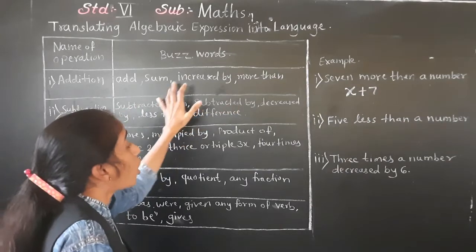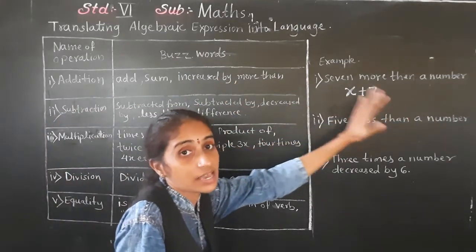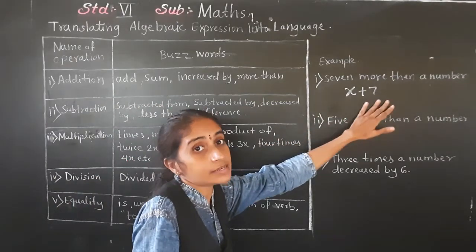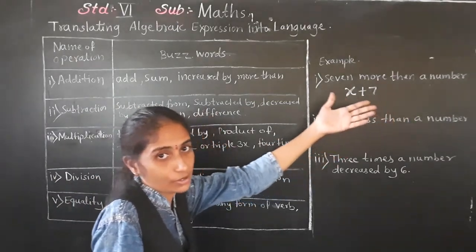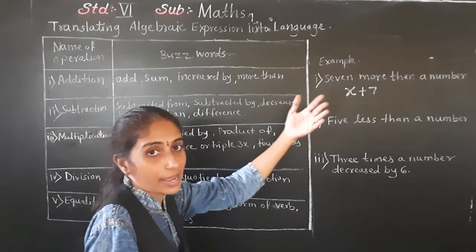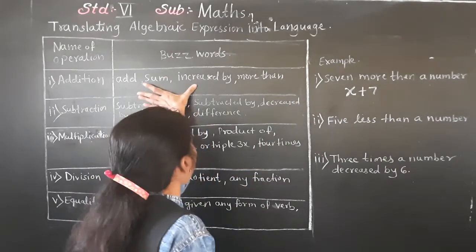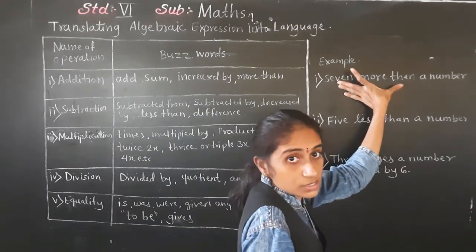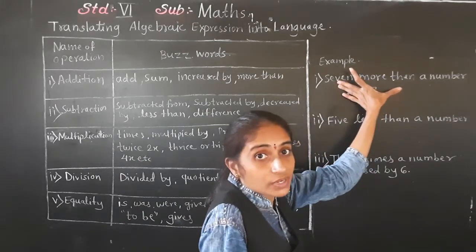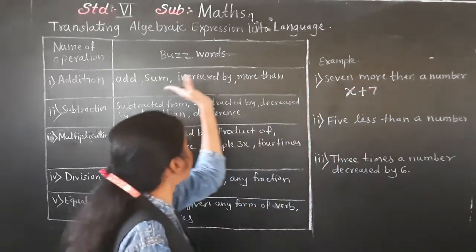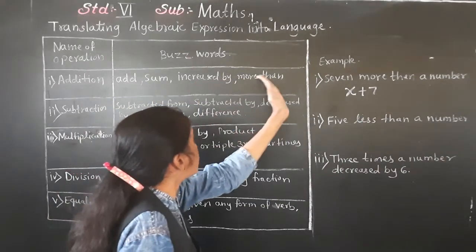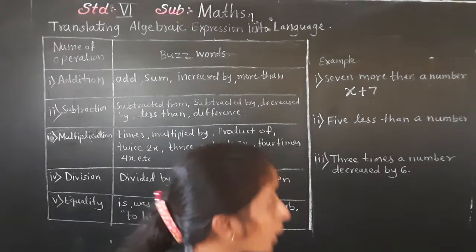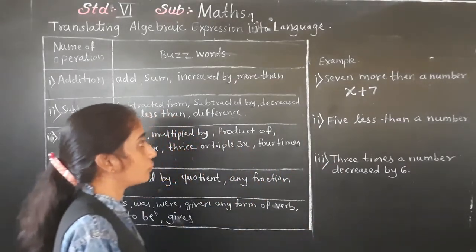So x plus seven. This may also be written as 'Sum of x and seven' or 'Addition of x and seven.' All these addition words — add, more than, increase by — should be remembered to form equations.